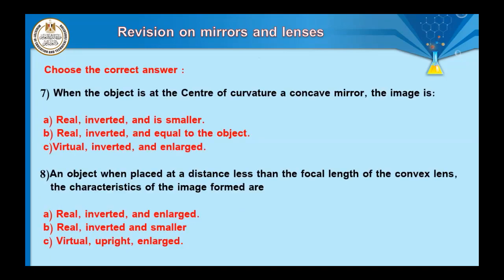Question number seven: when the object is at the center of curvature of a concave mirror, the image properties differ from the previous question about a convex lens. When the object is at a distance equal to double the focal length — at the center — the image is formed real, inverted, and equal to the object.